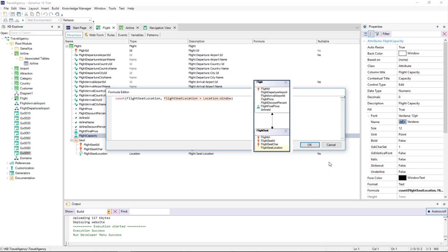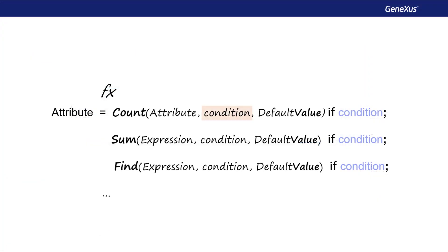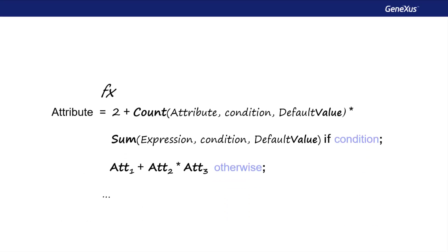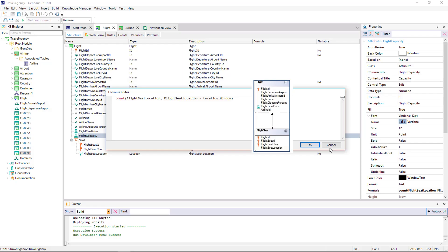In addition, because we indicate conditions for the records to be counted, the related records will only be counted as long as they meet that condition. The filtering condition is the second parameter in the formula, and as a third parameter we can indicate a default value — that is to say, the value that will be returned by the formula if no record is found to count, sum, and so on. Just like horizontal formulas, aggregate formulas can be stated with conditions. Also, horizontal formulas can be combined with aggregate formulas, providing a high degree of expressiveness in calculations.